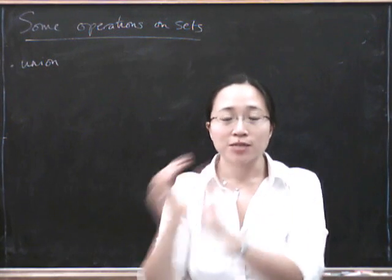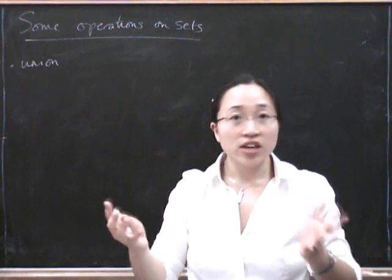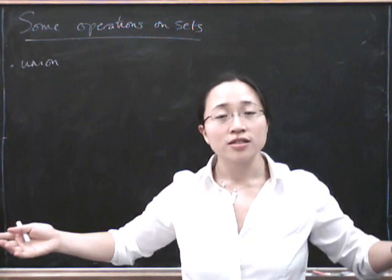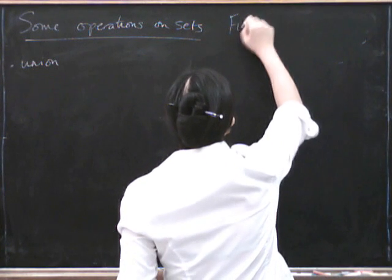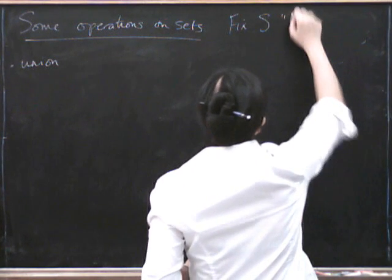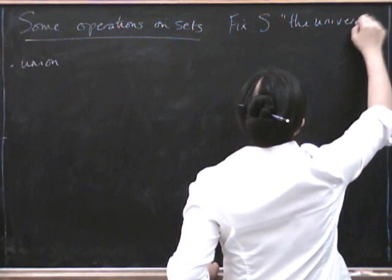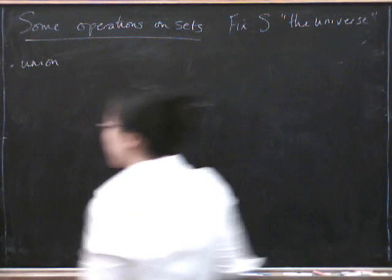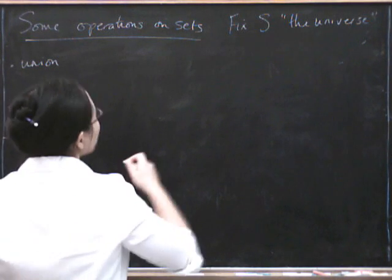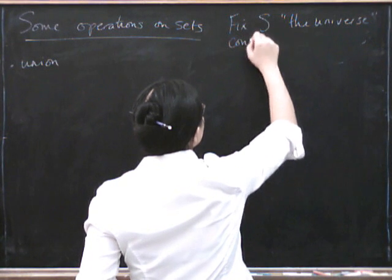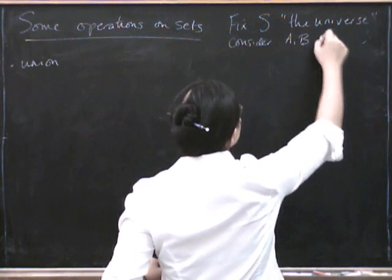So all our other sets are going to have to be subsets of those. So often when we're talking about sets of things, they're sets of things in the actual universe. So we can call this a universe. Fix S, the universe. Right. For many of these, it doesn't matter what your universe is.